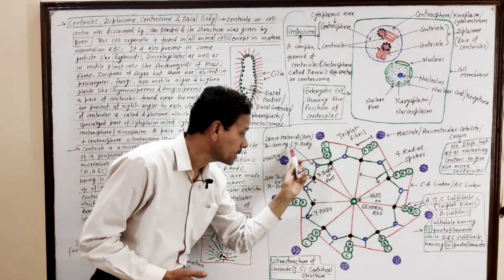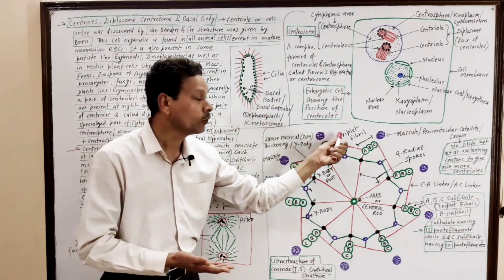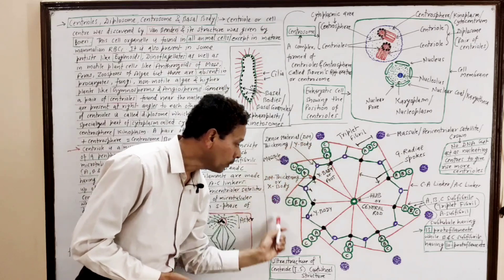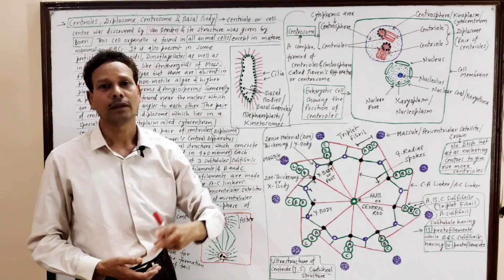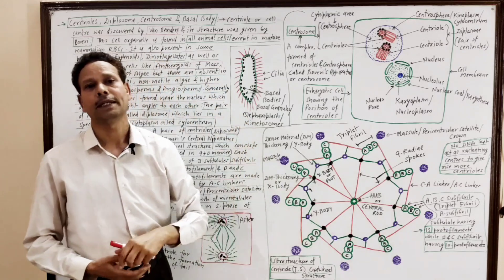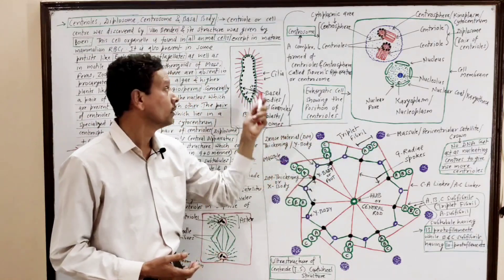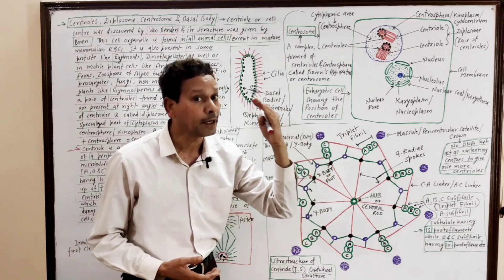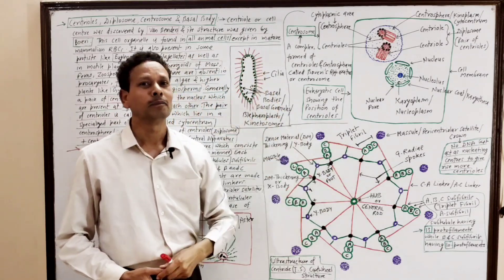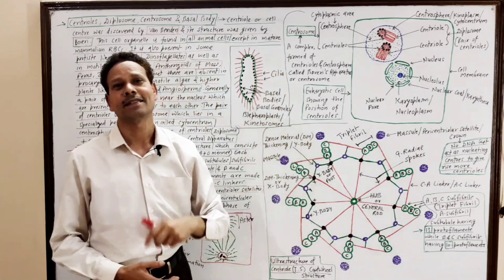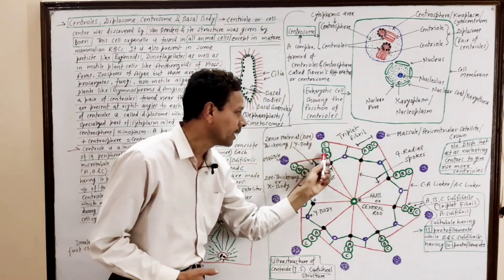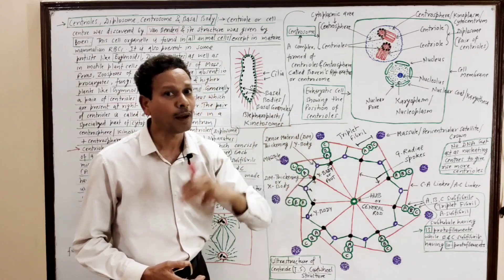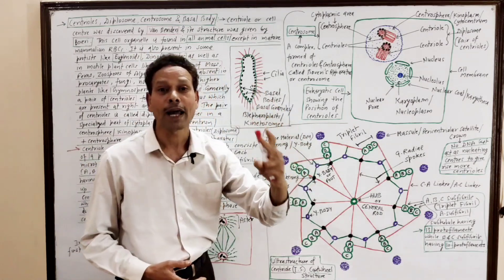Both in the case of basal body and centriole, the arrangement of peripheral microtubules is nine-plus-zero, with nine triplet microtubules. In cilia and flagella the peripheral microtubules are doublets with A and B subunits, but here in the centriole there are A, B, and C — three subunits. The A subunit has 13 microfilaments, and B and C each have 10 microfilaments.